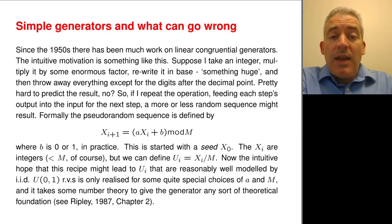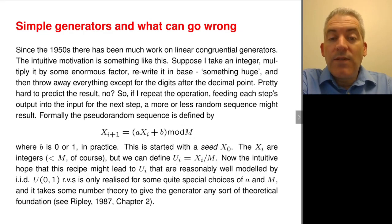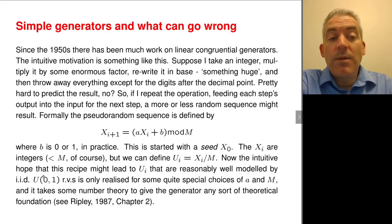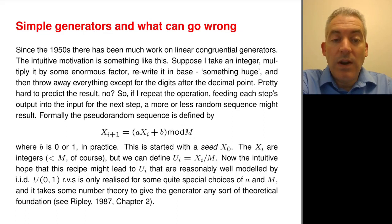That is clearly going to give you a sequence of integers from 0 up to m-1 if you start with an integer. It may or may not look random depending on your choices of a, b, and m. Given that sequence of integers, suppose that it looked random - what could you do? You could define u_i to be x_i over m, which gives you a sequence of rational numbers on the interval 0-1, and that sequence will look like uniform 0-1 random variables as long as your integers were uniformly distributed over 0 to m-1. That is the idea behind linear congruential generators.